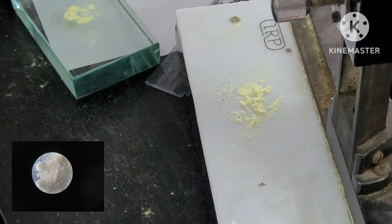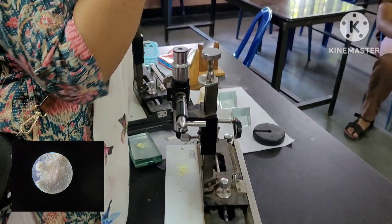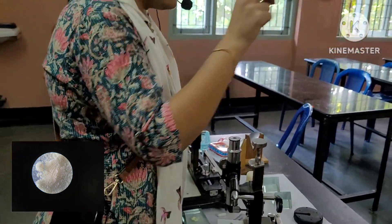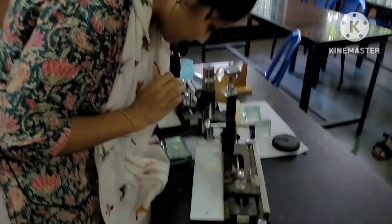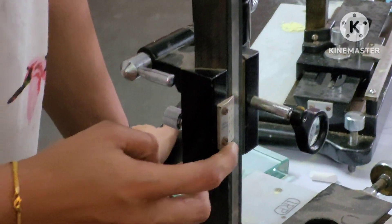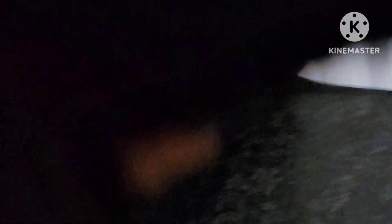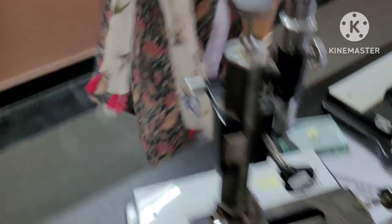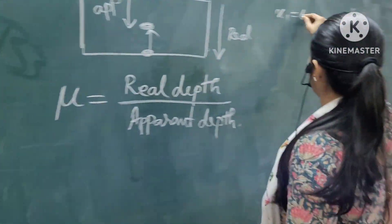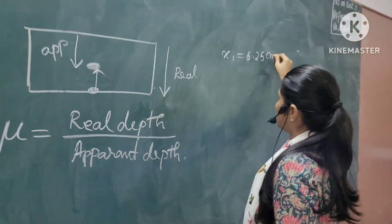It should not be a yellow tint — the actual powder particles should be seen in the microscope. Once that is visible, you will note the reading here. Here you can see the vernier scale — the zero of the vernier coincides with some reading in the main scale. For this experiment, we are getting 6.25. So the first reading, X1, is equal to 6.25 centimeter.